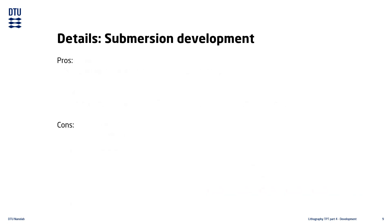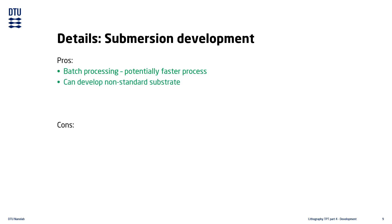Submersion development can be good for fast batch processing, since an entire wafer carrier with 25 wafers can be submerged all at once. It is also good for development of non-standard substrates, as most automated tools require standard substrates which can be handled by the tool. Submersion development is also easy to do manually in a fume hood using glass beakers.